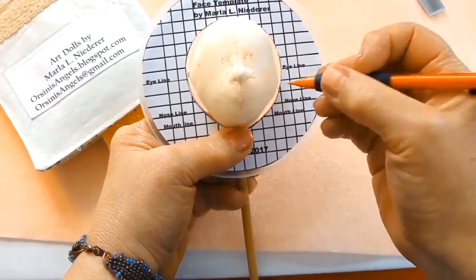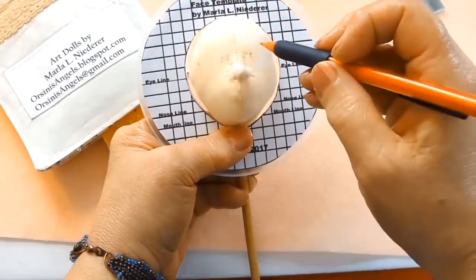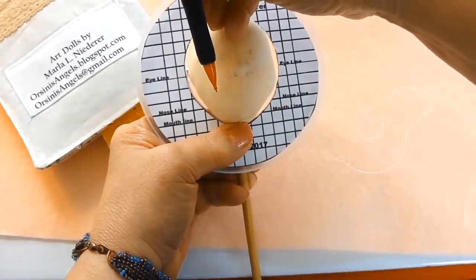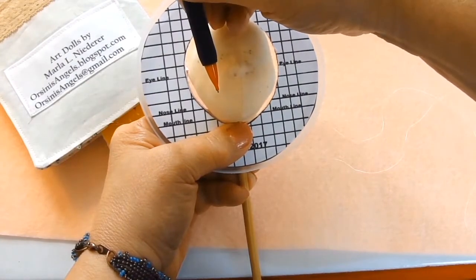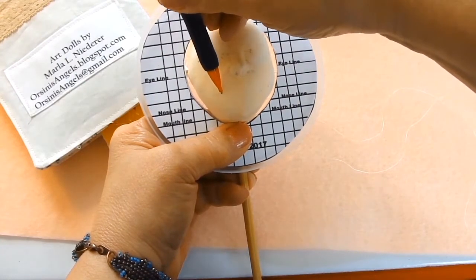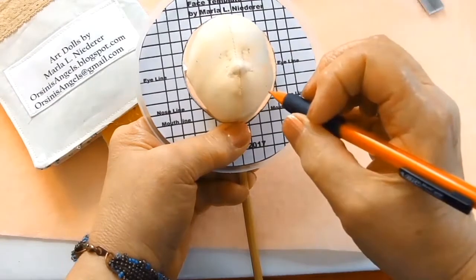Here what I'm doing is I'm using the center of each eye as a reference point for the outer corners of the mouth, and then I'll mark them with the pencil.